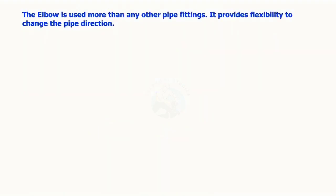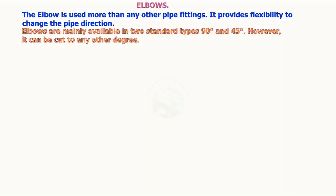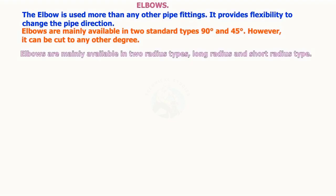The elbow is used more than any other pipe fitting. It provides flexibility to change the pipe direction. Elbows are mainly available in two standard types: 90 degrees and 45 degrees. However, it can be cut to any other degree. Elbows are mainly available in two radius types: long radius and short radius.